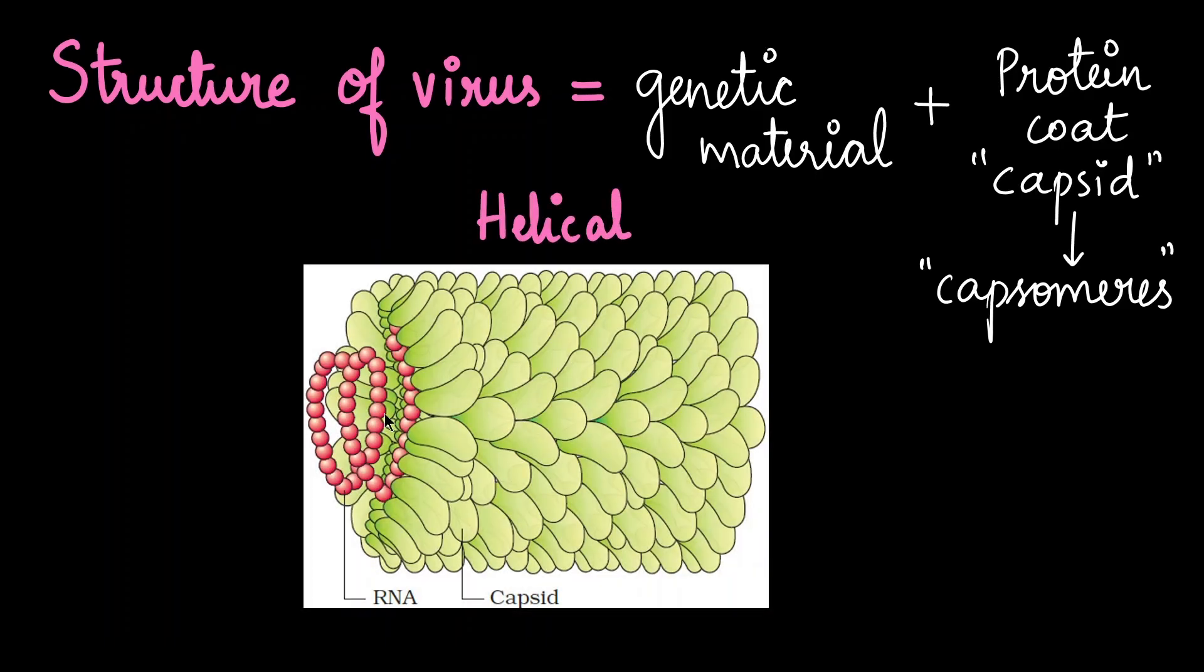One such shape is the helical shape. This is how a tobacco mosaic virus looks. The capsomeres here form the capsid, and then we have the genetic material within it.